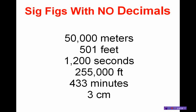The first measurement is 50,000 meters. 50,000 meters is a measurement and it does not have any decimal places. So I'm going to draw an arrow coming in from this side. When the arrow hits a zero, it will go all the way through the zeros and stop when it hits a real number. When it hits the 5, I start counting the numbers that remain. This problem has only one number that remains, therefore it has one significant figure.